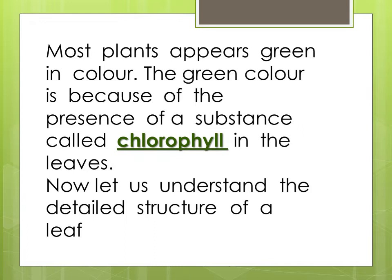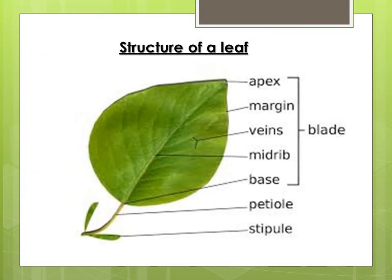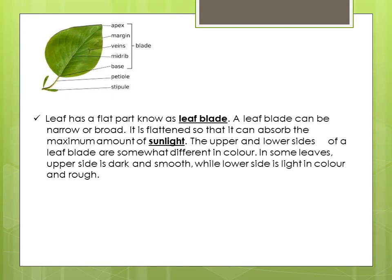Now let us learn about the detailed structure of a leaf. Leaves are of different colors, sizes, and shapes. When we take a close look at the leaf, we can observe the following. A leaf has a flat part known as the leaf blade. A leaf blade can be either broad or narrow. It is flattened so that it can absorb the maximum amount of sunlight.